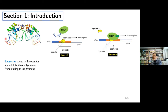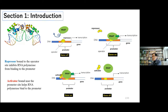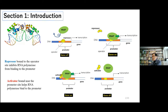When a repressor binds on the promoter region of DNA, this binding blocks RNA polymerase binding to the promoter locus, which represses transcription and turns off gene activity. But when the repressor unbinds from the promoter, RNA polymerase can bind and the gene is turned on. And when an activator binds nearby the promoter site, it can recruit RNA polymerase to enhance gene activity.